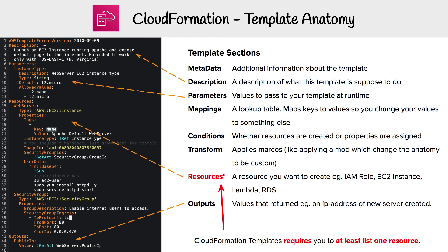If you take a look at SAM, you'll have a better understanding of what transform does. Then you have resources, which is the main show of the whole template — these are the actual resources you are defining that will be provisioned. Think any kind of resource: IAM role, EC2 instance, Lambda, RDS, anything.